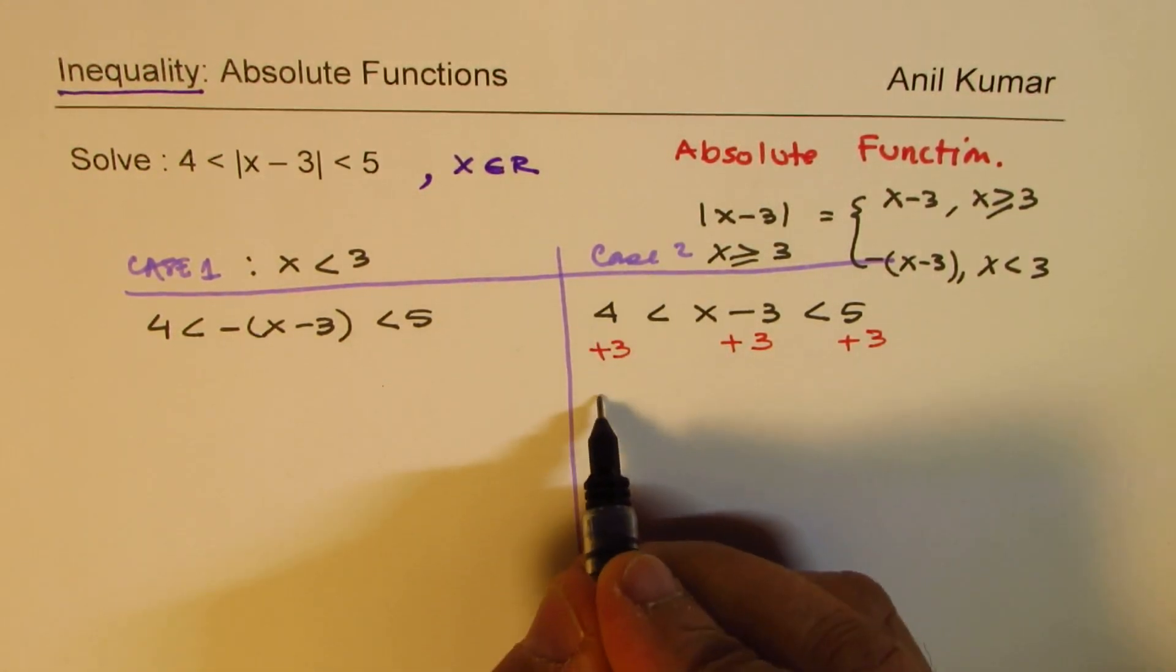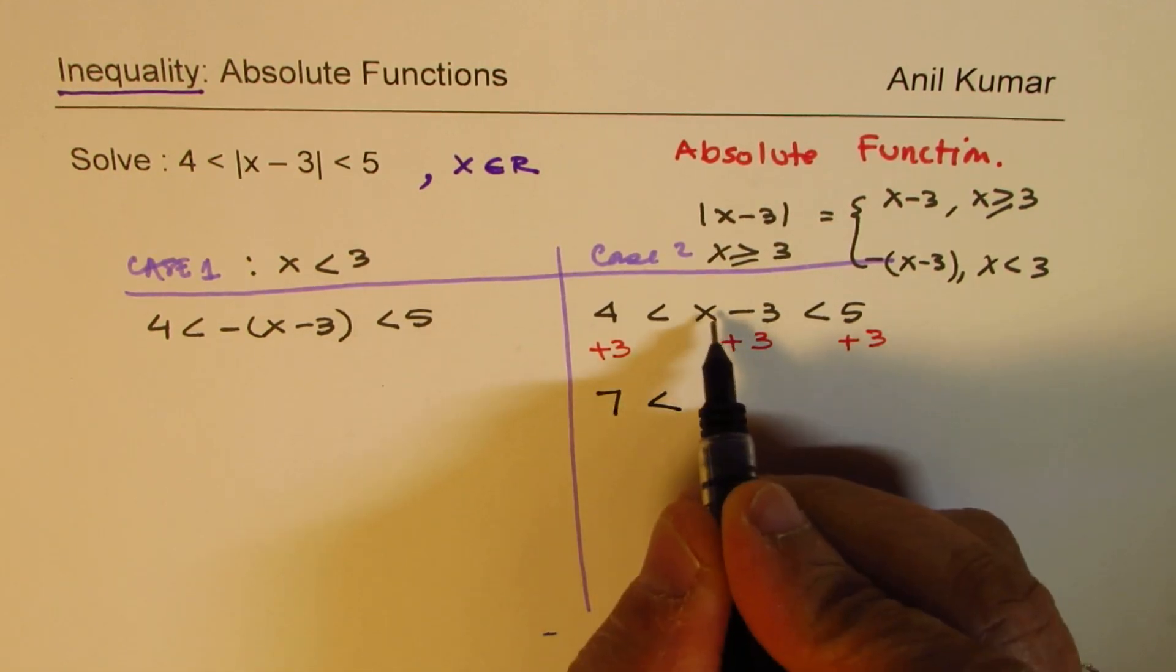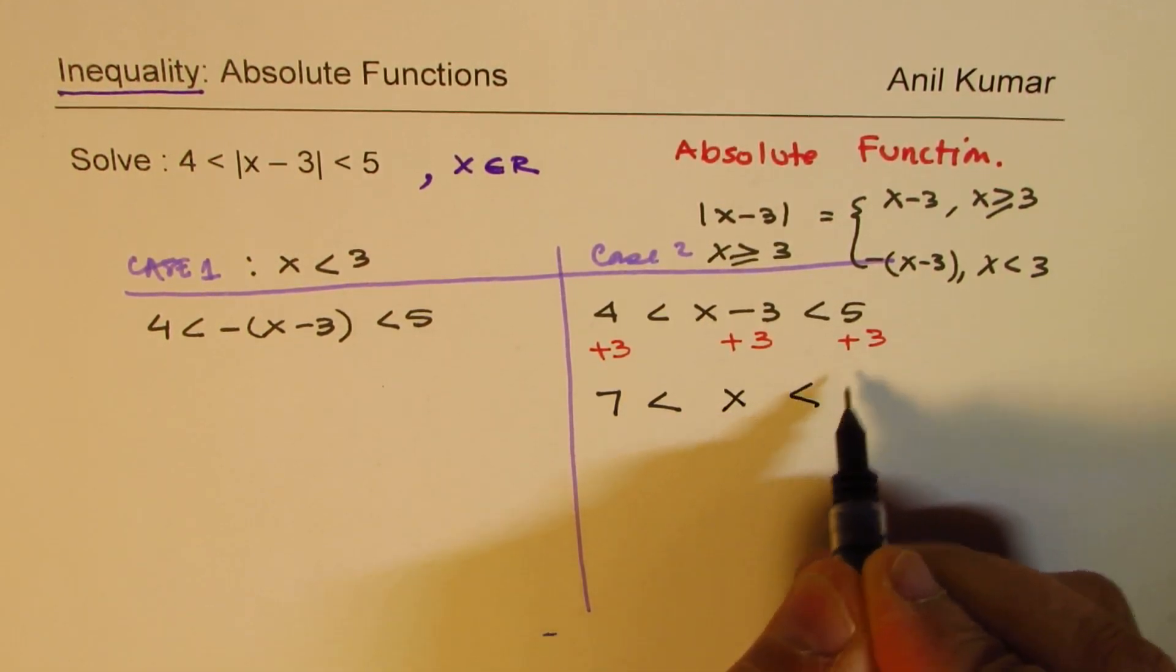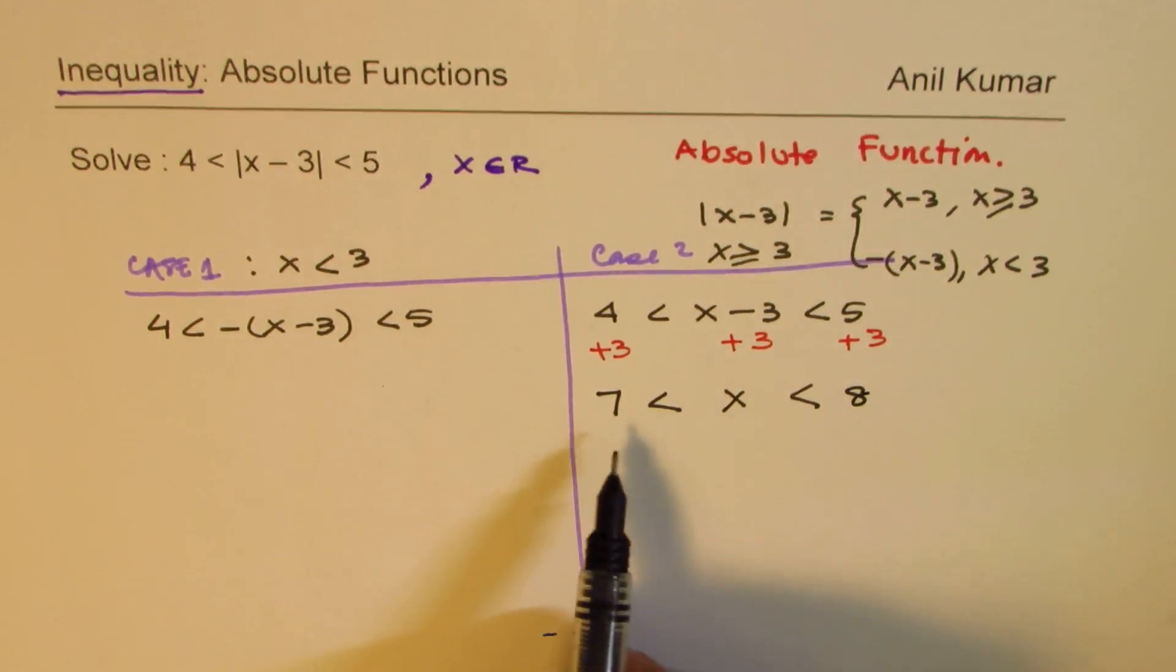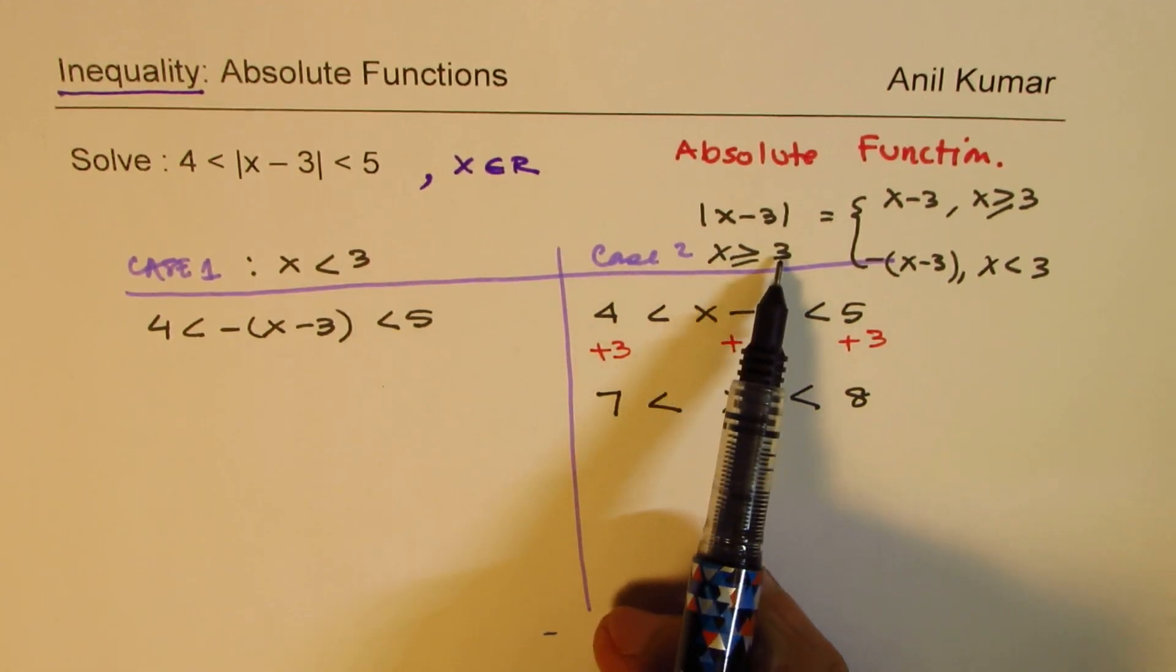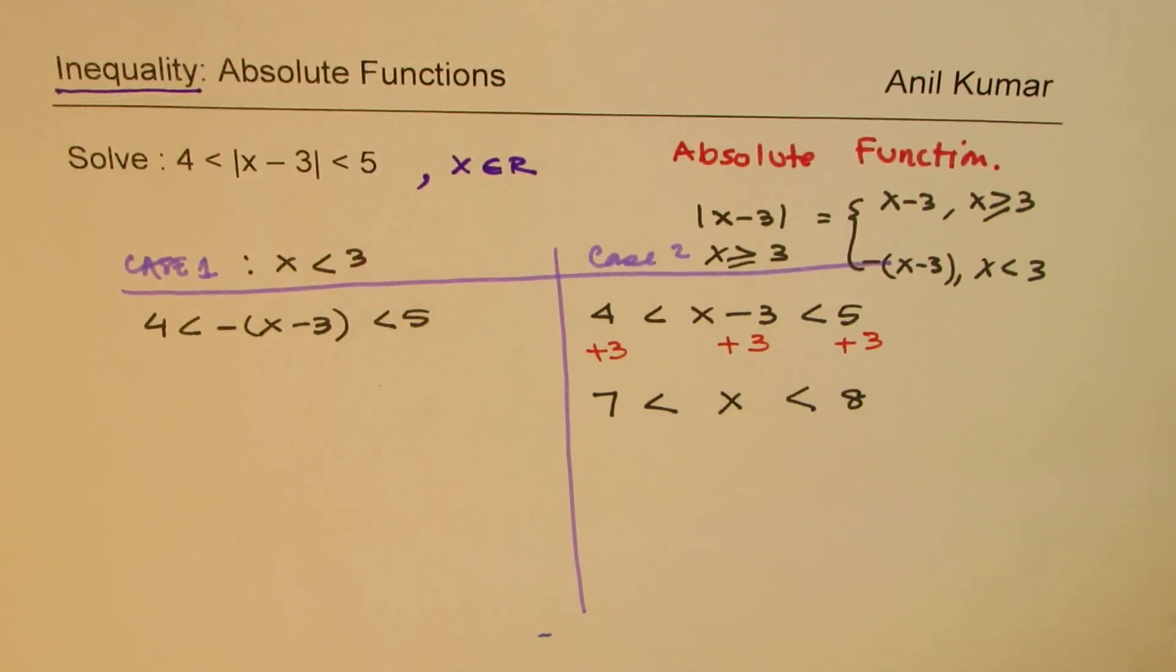If I add 3, we get 4 plus 3 is 7, here x, and here we get 5 plus 3 is 8. So we get a solution which is x is between 7 and 8. We know x has to be greater than 3, so they are valid solutions.